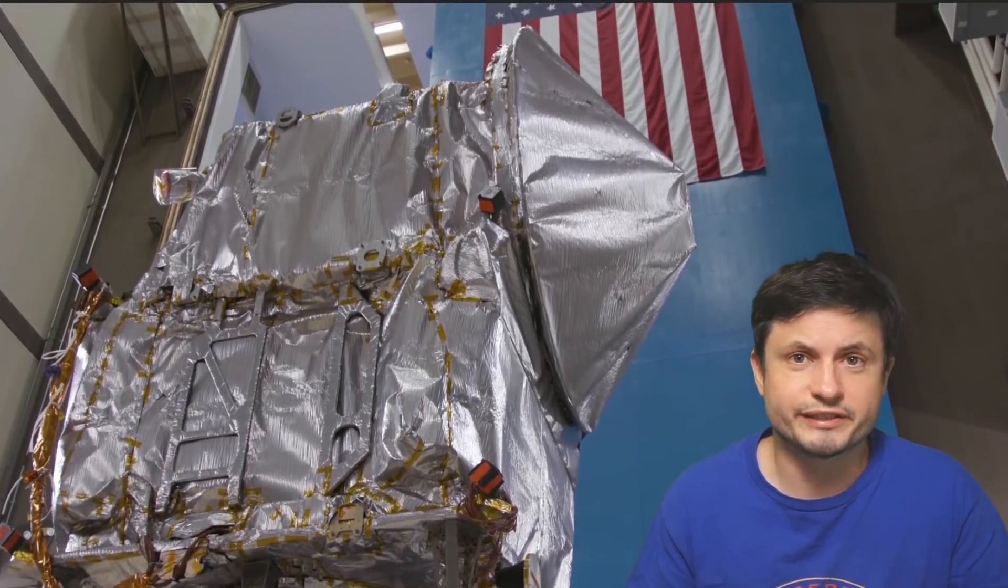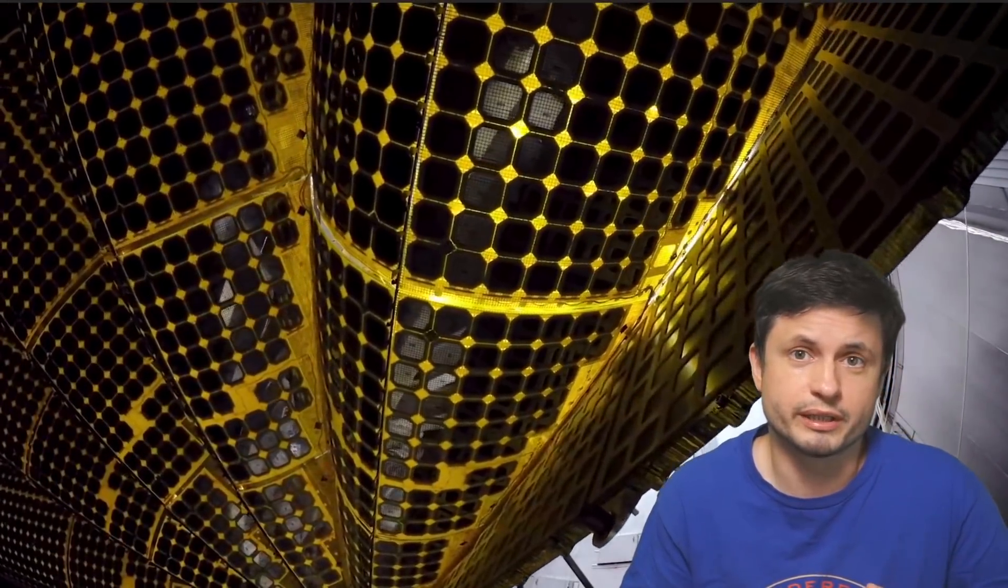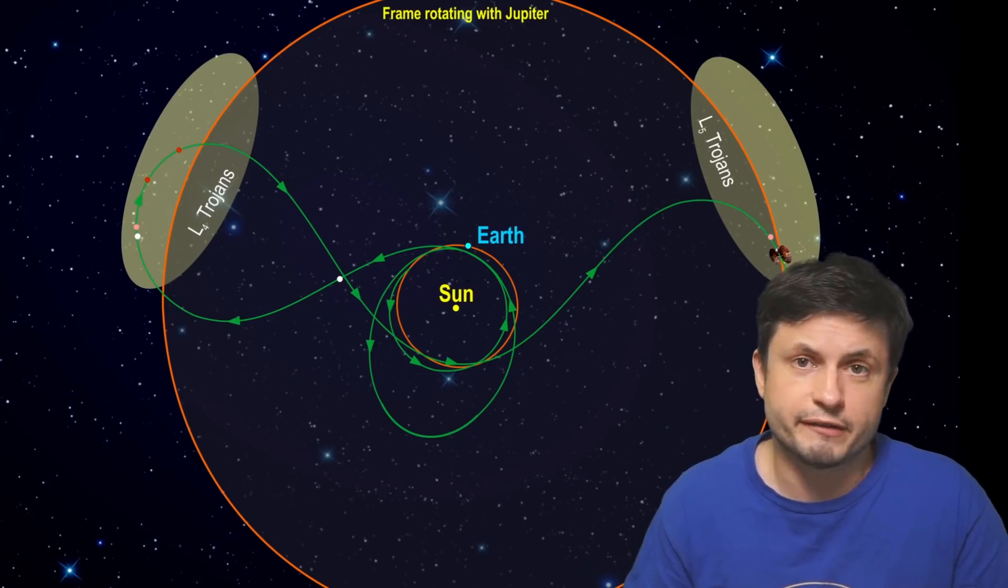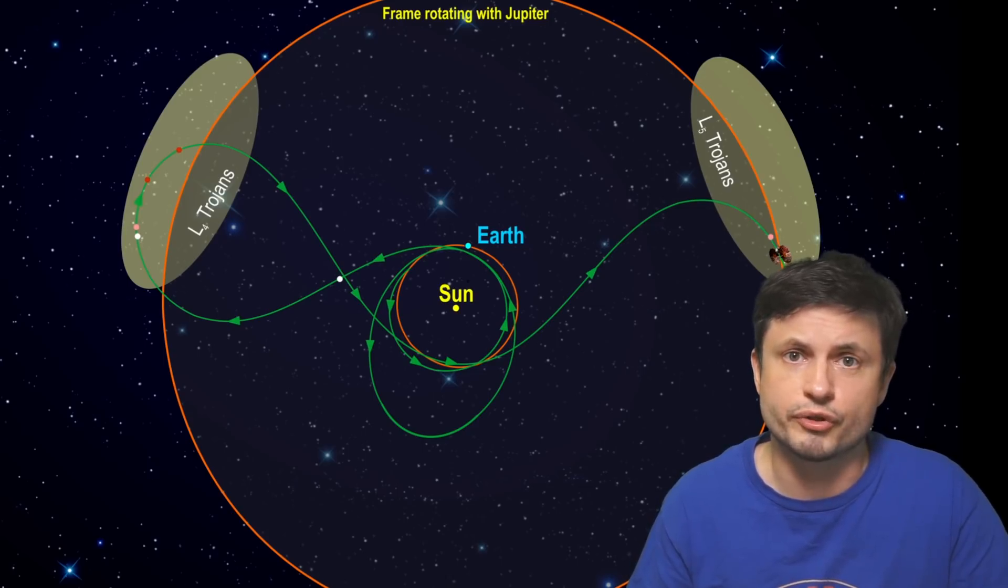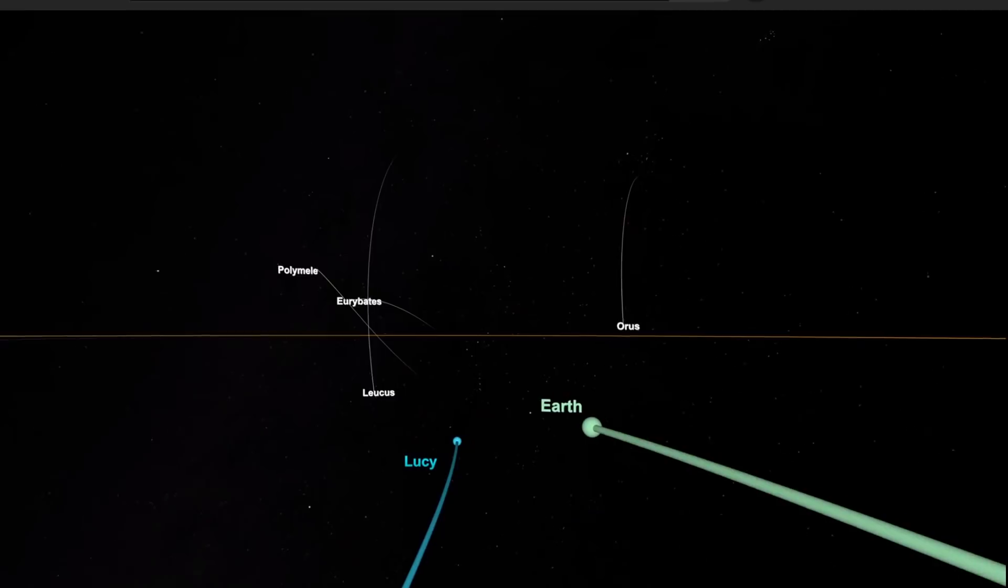First of all, this is a mission that's going to last about 12 years and it's going to use one of the most complex maneuvering trajectories that's ever been attempted by NASA. Over approximately 12 years, it's going to take this trajectory that you see in green, passing by Earth several times, using it as a slingshot maneuver and visiting both areas around Jupiter, referred to as the Trojans. And it's actually going to be using Earth for gravity assist several times.